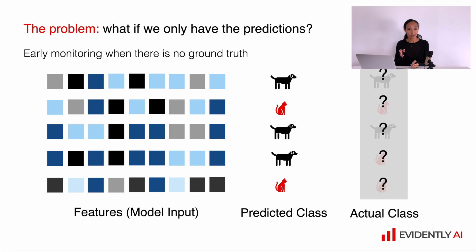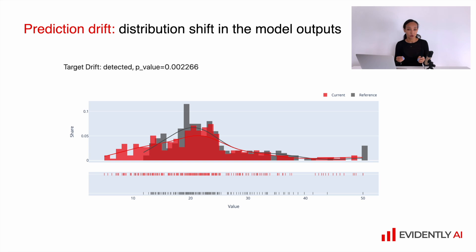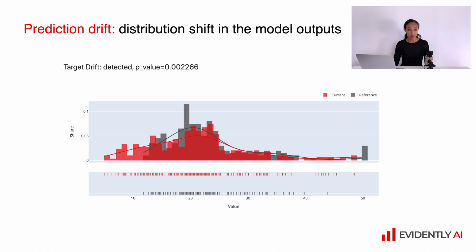In this case it makes sense to come up with some proxy metrics which will serve as a potential signal of model performance decay. The first metric I want to bring up is prediction drift. The idea is to compare the model's output on top of the reference data with the model's output on top of the current batch of data, and we compare such outputs by comparing their distributions.